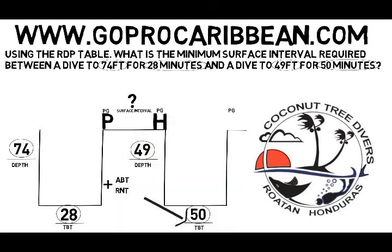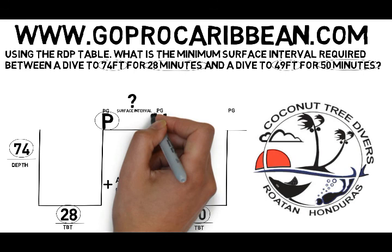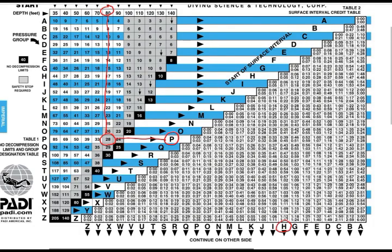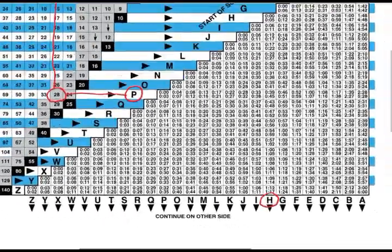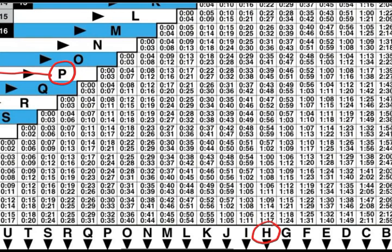The question now is: how do we get from pressure group P — where we end the first dive — to pressure group H, where we need to start the second dive? We use side one of the table, the surface interval credit table. We're starting the surface interval in pressure group P and need to end it in H. Drawing those lines to find the intersection, a surface interval of 39 to 45 minutes is required, so the minimum surface interval is 39 minutes.